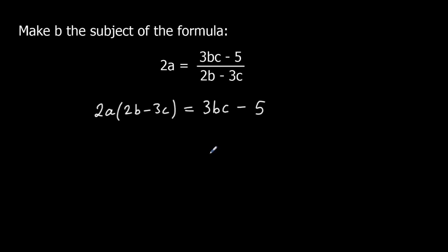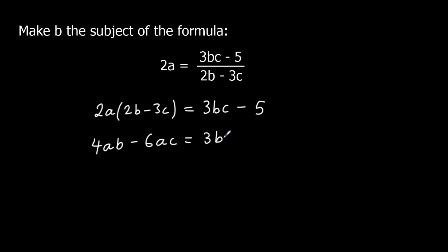I'm going to expand the bracket: 2a times 2b — 2 times 2 is 4, and a times b is ab — so 4ab, minus 2 times 3 is 6 and a times c is ac, so minus 6ac. And that equals 3bc minus 5.